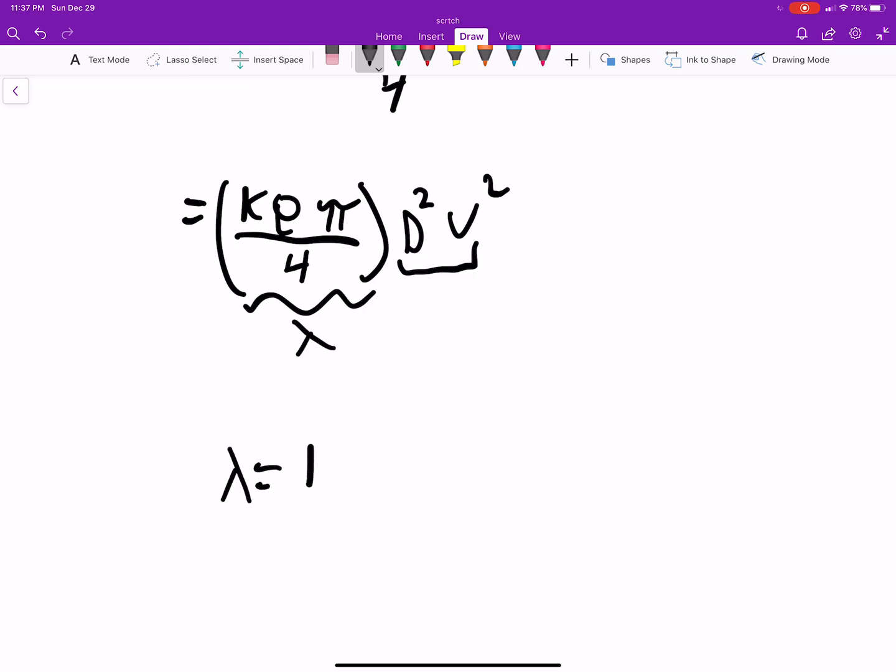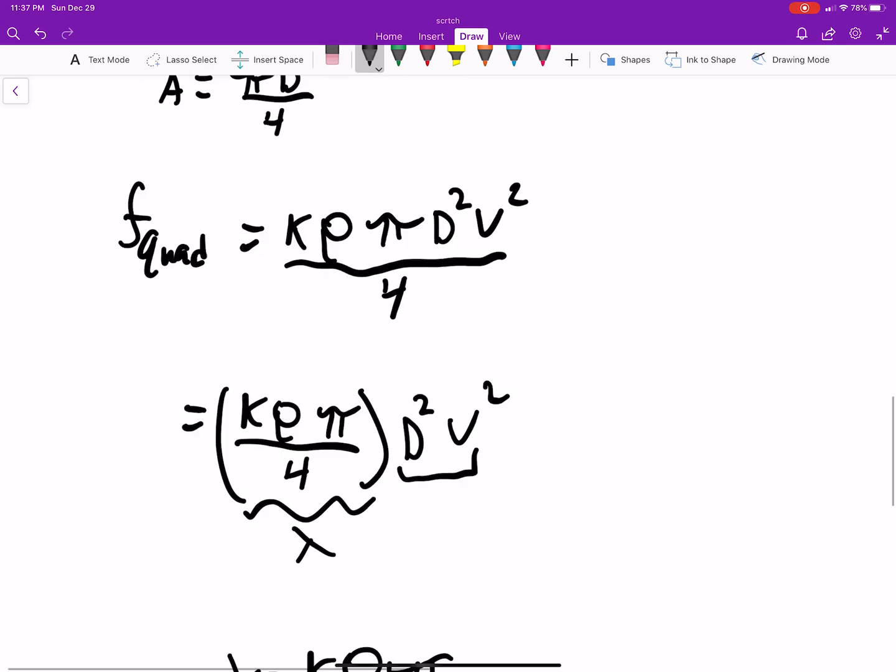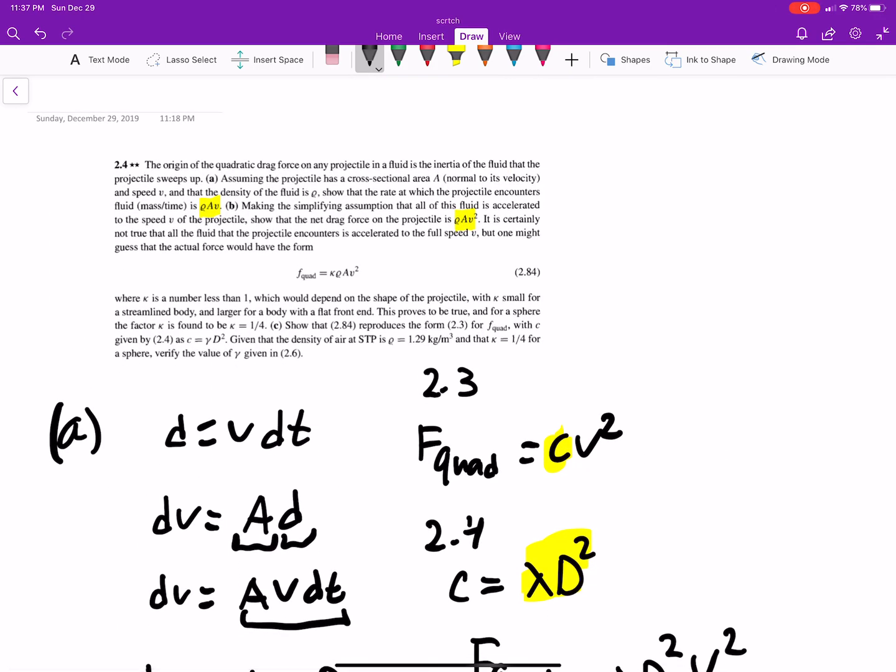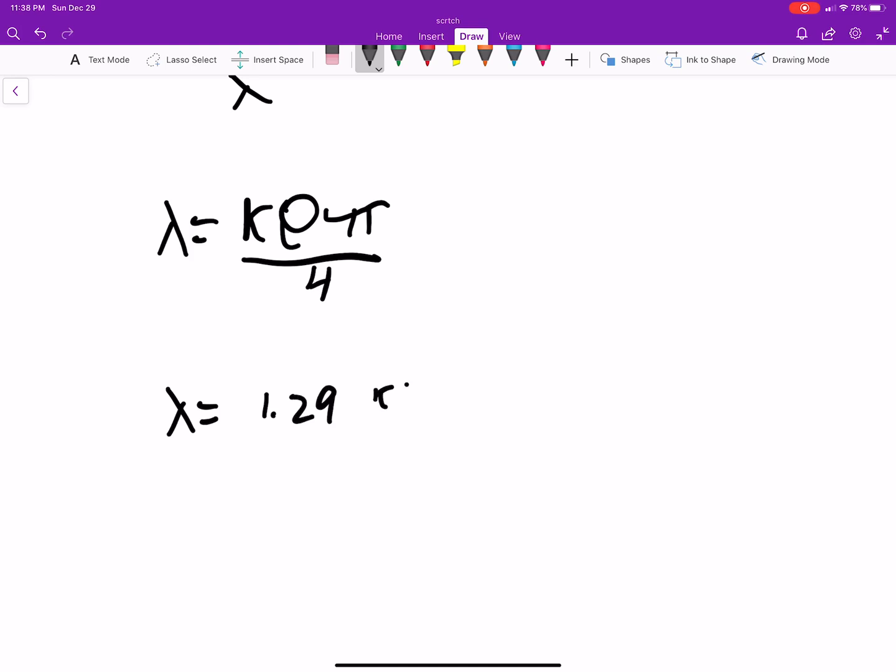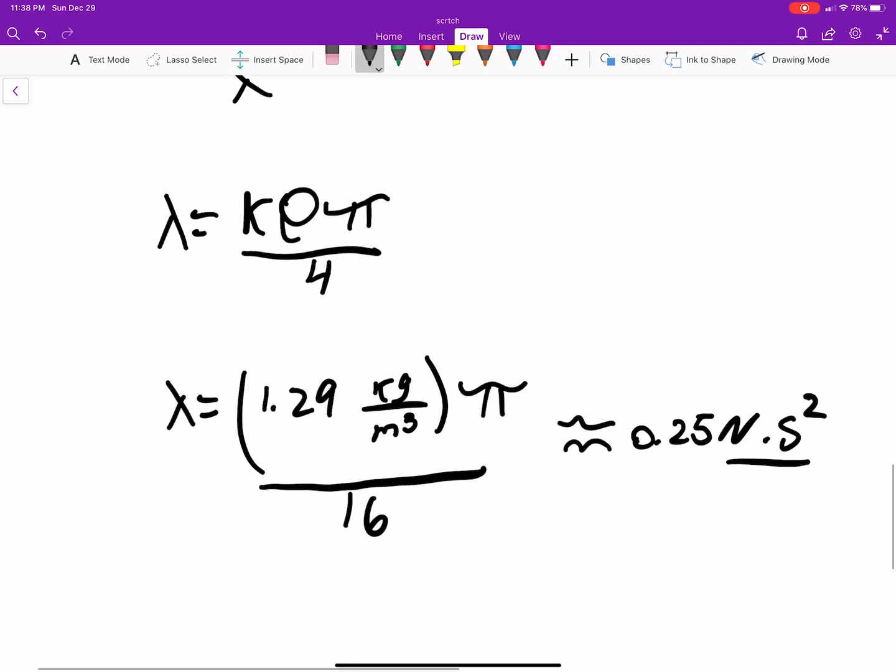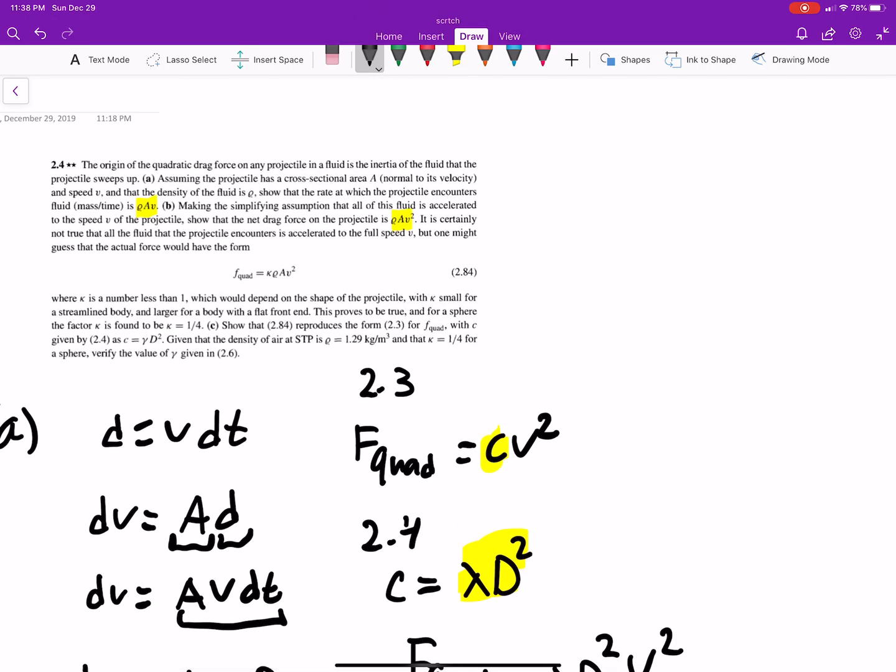So, if λ equals all this, we can substitute the values they gave us into here to confirm what they gave us for λ. So, let's see. What did they give us? If you go up here, I'm pretty sure they gave us everything we need. Okay, we have K being 1/4. We have our density. Yeah, we have everything. So, let's see. This is 1.29 kilograms per meters cubed times π all over 16. Which, if you plug that in, you should get about 0.25 newtons times second squared over meters to the fourth. And there we go. We confirmed that value. We saw that it reduces. And we verified the value.